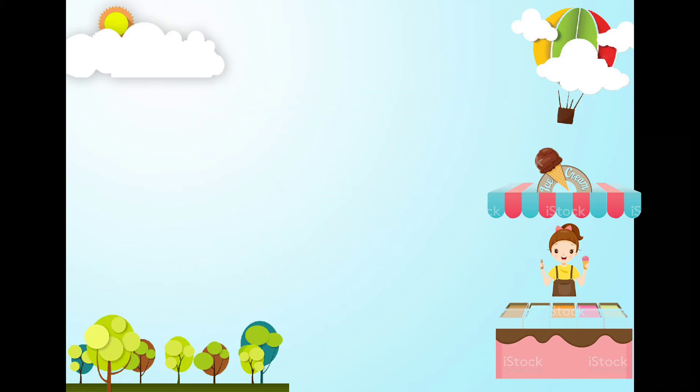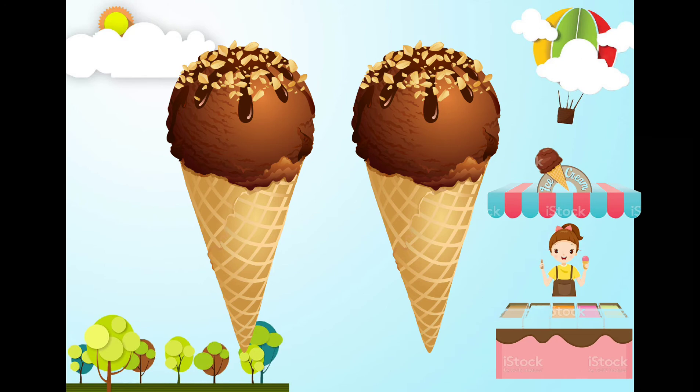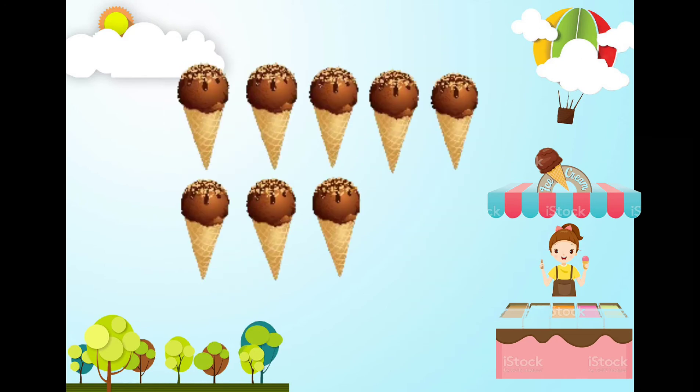My friends, Ava and Thea, wants an ice cream too. And, I will give 1 ice cream for Ava and 1 ice cream for Thea. Now, let's do the subtraction. 8 ice creams minus 2 ice creams. Let's count if how many are left. 1, 2, 3, 4, 5, 6. So, what is 8 minus 2? 8 minus 2 equals 6. Very good.